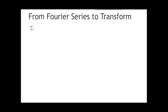First, let's write out what we know from Fourier series. We see that we can represent a function with period T as an infinite sum of sinusoidal functions e to the jn·omega_0·t. The amplitude of the sinusoidal function at each different frequency is 1 over T times the integral of f(t) times e to the negative jn·omega_0·t, from negative T over 2 to T over 2.